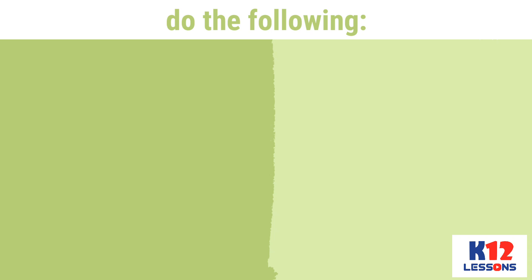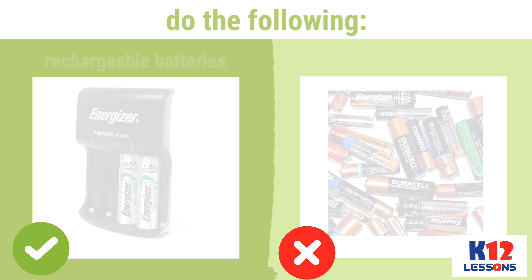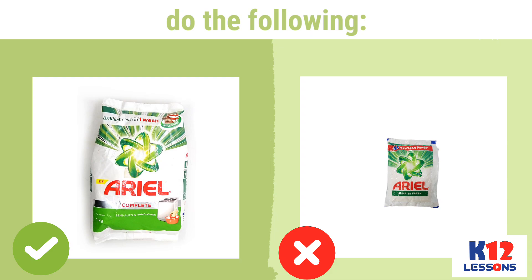We can do the following. First, buy rechargeable batteries instead of disposable batteries for our gadgets. This way, we can minimize waste and save money at the same time. Second, buy products in bigger packs than those packed in small sachets. Small sachets prevent excessive use of a product, but such practice can increase the production of non-biodegradable waste because more plastic sachets will be discarded.